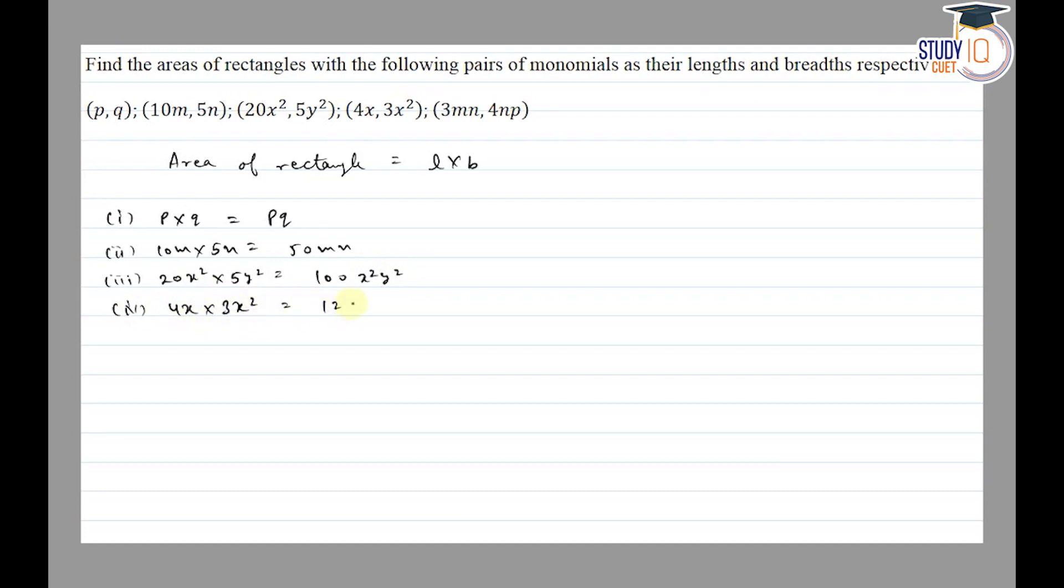Fifth is 3MN into 4NP, so 3 times 4 is 12, M, N into N is N square, P. Thank you.